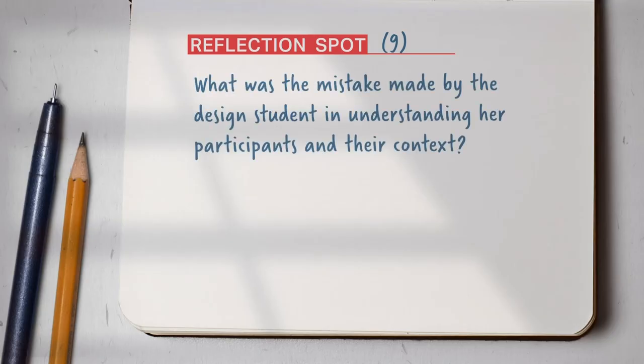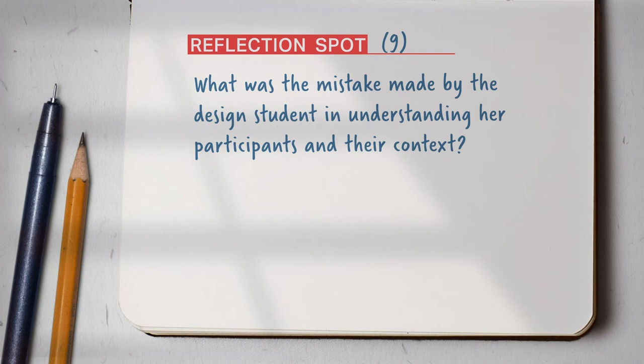She was surprised to observe that children who needed medical care would often refuse the healthcare services offered at the shelter, or that children often chose to forage for food on the streets or the railway platform rather than come to the shelter. It is quite obvious that she made a mistake in skipping the literature review or secondary research — but how did this error affect her understanding of the children and their relationship with the NGO?